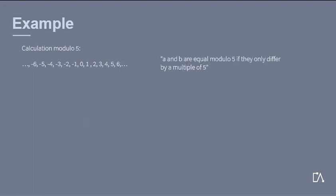This slide will demonstrate how to work with residue classes. We decide on modulo 5. First, we list integers, where we decide for simplicity on the numbers between minus 6 and 6. So far we have learned that 2 numbers are equal modulo 5 if they only differ by a multiple of 5.